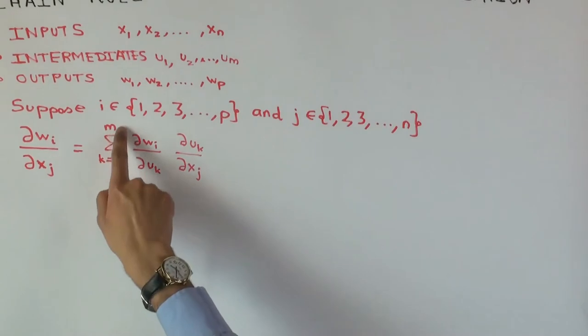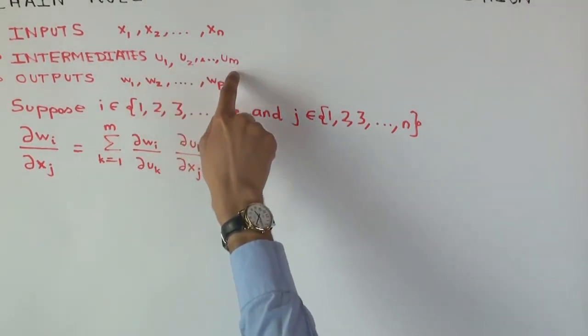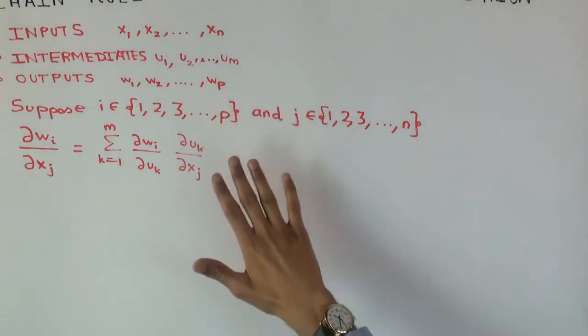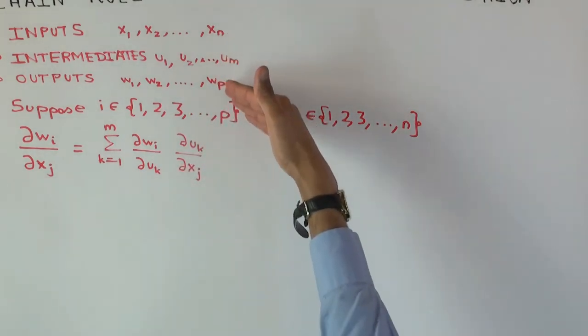So it's a sum of m products, where m is the number of intermediate variables you're going through. And these partials, of course, you know what it is relative to holding the others constant. This is actually the chain rule for partial differentiation if you're just doing two levels of composition.